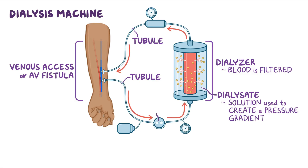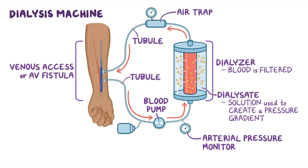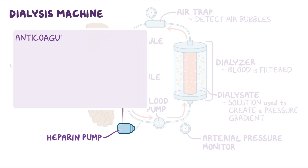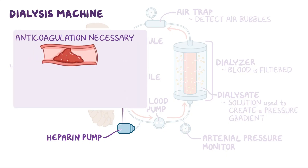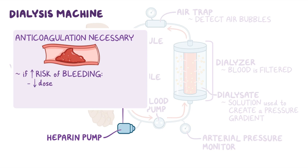Other components include blood pumps to help draw blood from the client, an arterial pressure monitor, and an air trap or sensor to detect air bubbles and stop them from entering the circulation. Finally, the dialysis machine also contains a heparin pump, because anticoagulation is necessary during dialysis due to the risk of blood clots. In clients with a high risk for bleeding, a lower dose of heparin, citrate, or no anticoagulation can be used.